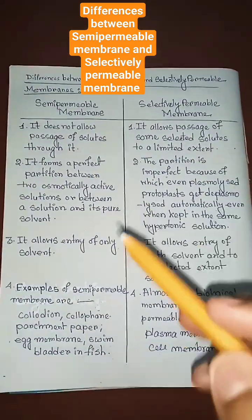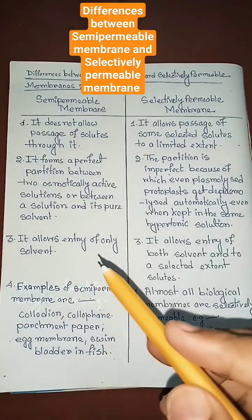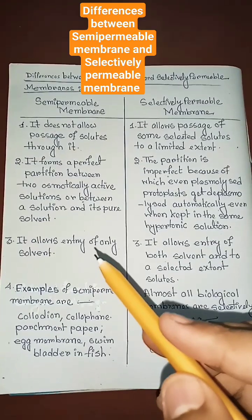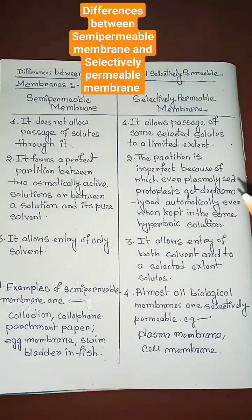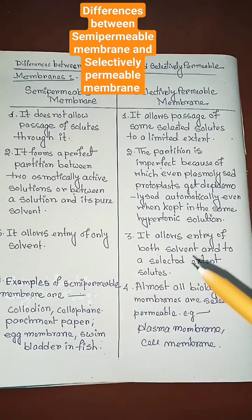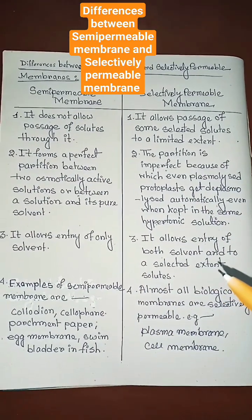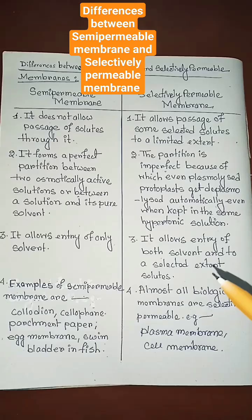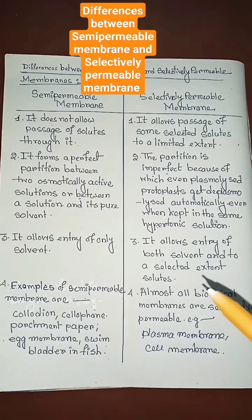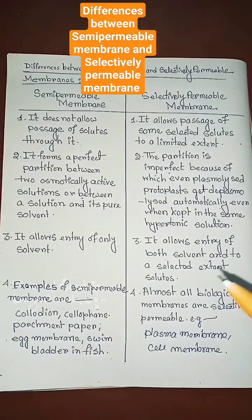A semi-permeable membrane allows entry of only the solvent, whereas a selectively permeable membrane allows entry of both the solvent and, to a selected extent, solutes.